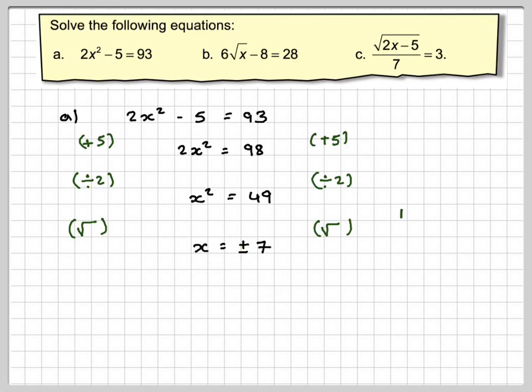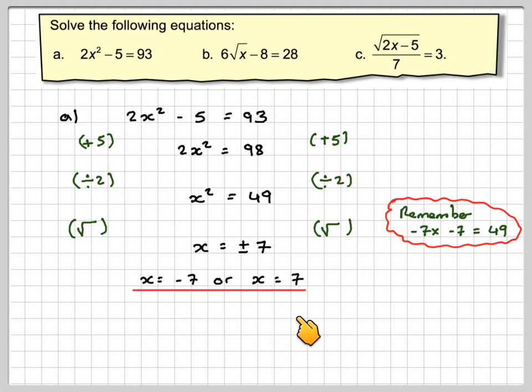It's plus or minus 7 because if we do minus 7 times minus 7, we get plus 49. So there are two possible answers: x equals minus 7 or x equals 7.